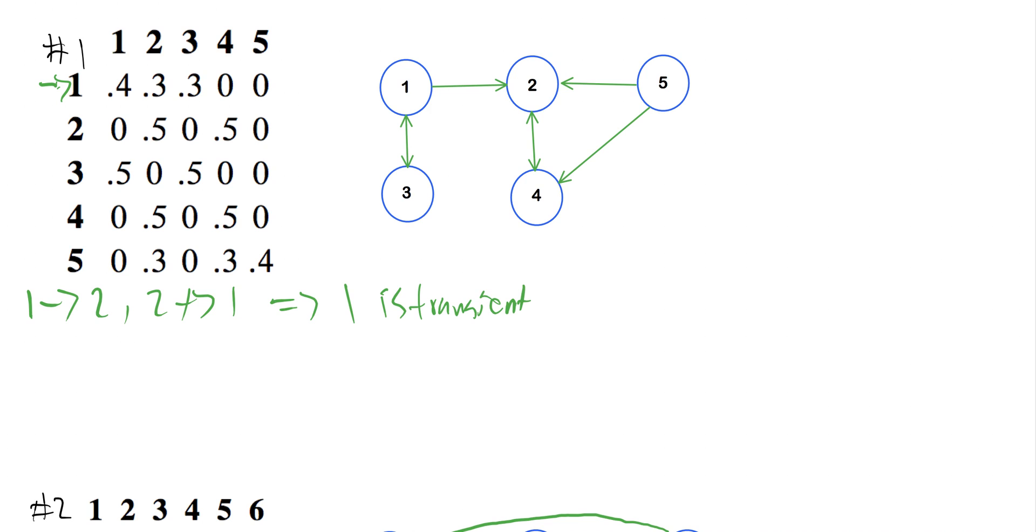So likewise, we have three going to two, but two does not go back to three. And we can see here, right? We can get to two from three, but there's no way for two to get back to three. There's just no way. So three is also transient.